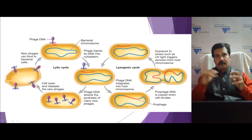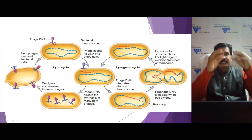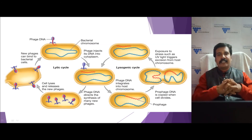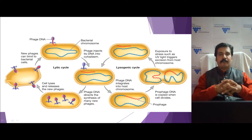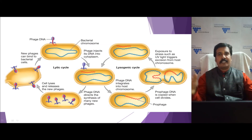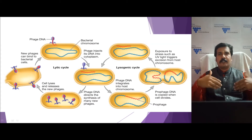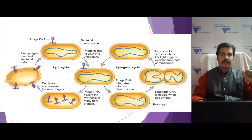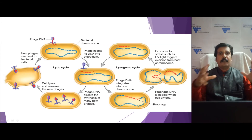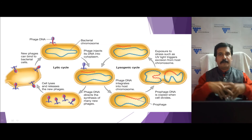In contrast, in the lysogenic pathway, the internalized genetic material gets integrated with the host chromosome of the bacterium, forming a prophage. Once the bacterial cell divides, this prophage also divides and is carried to the next generation. In some instances it can revert to its original state and enter the lytic cycle. This is how a bacteriophage works through its replication cycle, and understanding this is key to better understanding the transduction process.